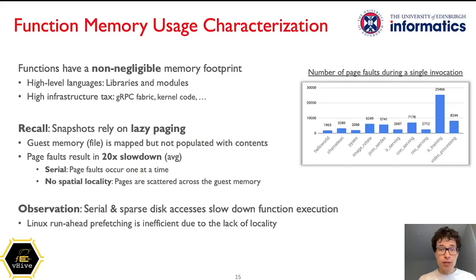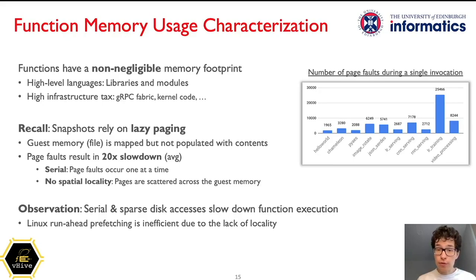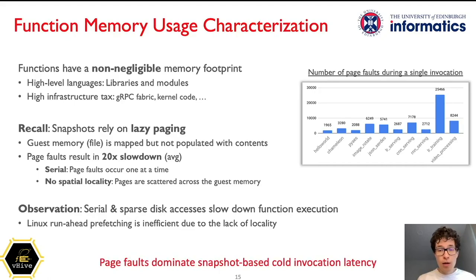This looks strange — what could slow down function processing in a cold invocation? These functions are written in Python and use quite a lot of different functionality inside the guest OS, for example, the gRPC communication fabric and the networking stack. We should recall that Firecracker doesn't populate guest memory with its contents from the snapshot, instead relying on lazy paging. This results in a series of page faults arising after the function resumes its execution. These page faults are processed one by one and take a lot of time because many of them require retrieving their contents from disk. Hence, we found that disk accesses upon page faults dominate the whole cold start latency.